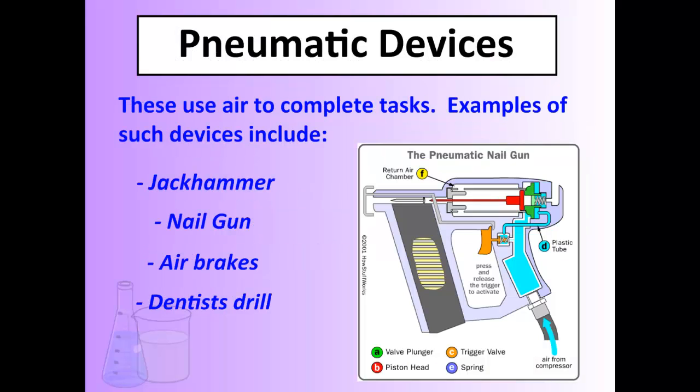Pneumatic devices would be the opposite — they use air, which is compressible, to operate an object. Examples include a jackhammer, a nail gun, air brakes, and a dentist drill. All of these use air to force or speed up something to make it work more efficiently — for example, a nail gun fires nails out faster because it shoots them out with air under pressure.